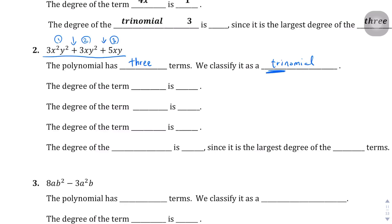Since this polynomial has three terms, we classify it as a trinomial — just like a tricycle has three wheels. The first term is 3x²y². The degree of a term is found by adding all the exponents together, so two plus two is four. Therefore the first term has a degree of four.